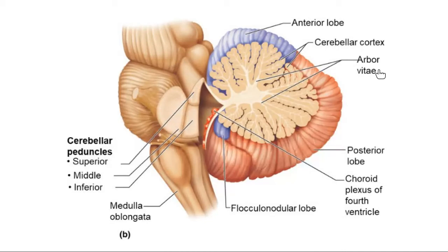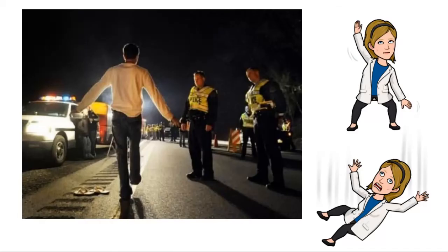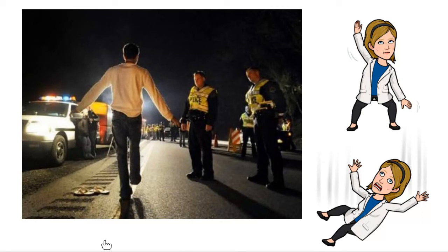Briefly about the cerebellum: from lab, we have the arbor vitae — the tree of life — which is the white matter inside the cerebellum. The gray matter on the outside is called the folia, folded up really tightly to make space for lots of neurons. We're not studying a lot about the cerebellum except to note that it is very easily influenced by alcohol.